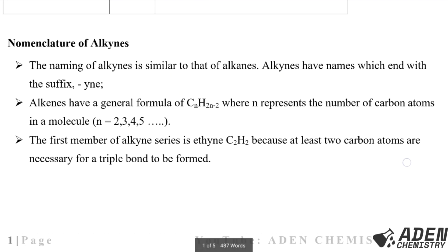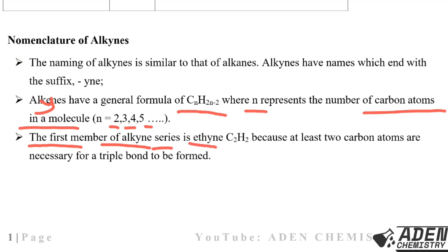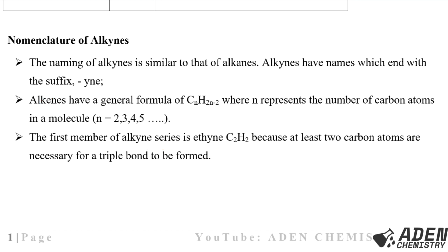The names of alkynes are similar to those of alkanes and alkenes, but with the suffix '-yne'. Alkynes have a general formula of CₙH₂ₙ₋₂, where n represents the number of carbon atoms, starting from n = 2, 3, 4, 5... The first member of the alkyne series is ethyne, written as C₂H₂, because at least two carbon atoms are necessary for a triple bond to be formed.